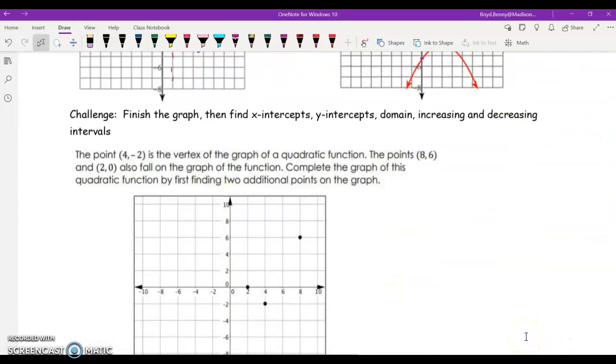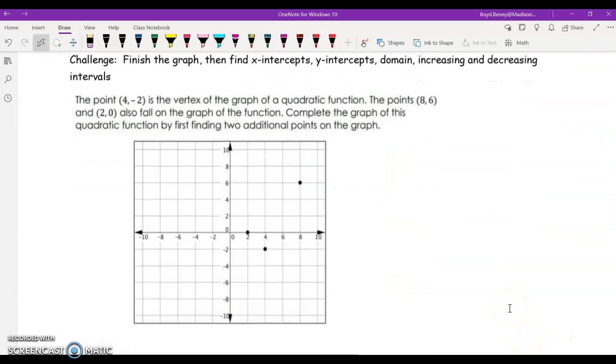So, let's move right on along. Finish the graph, then find the x-intercepts, y-intercepts, domain, increasing and decreasing intervals. Okay, so, we're told that the point 4 negative 2 is our vertex. So, here's our vertex right here.